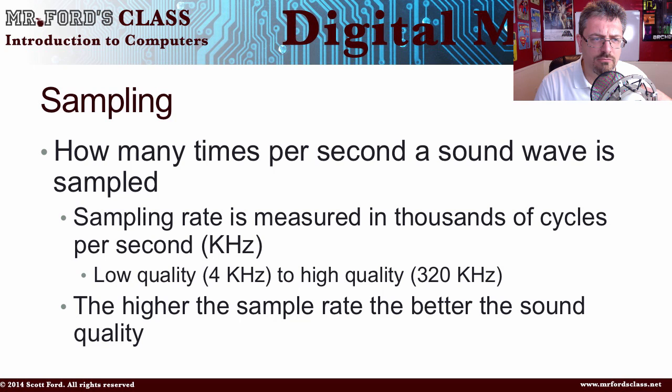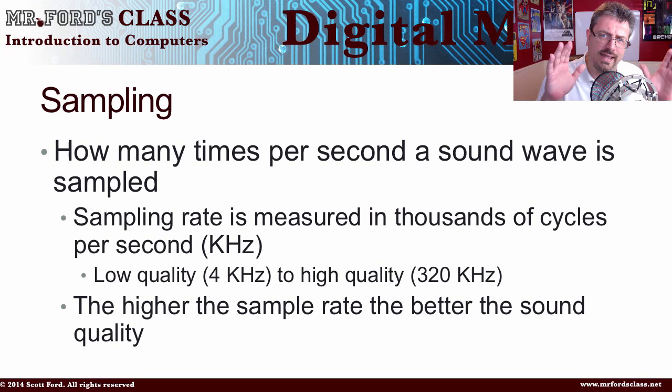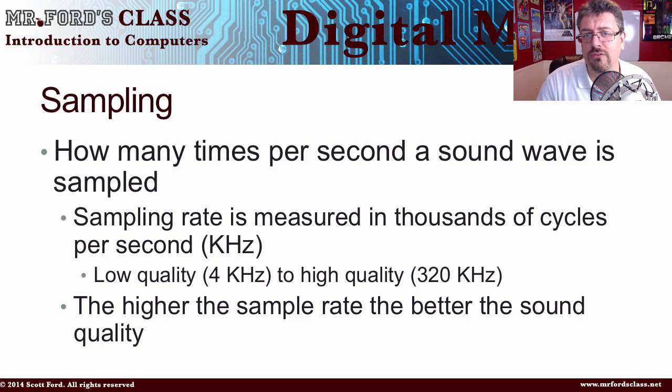Low quality — meaning really bad quality audio which isn't captured very well — is about 4 kilohertz, while high quality is around 320 kilohertz. So we have a range between really low and high. Obviously the higher the sample rate, the better the sound quality is going to be — the more of a representation of what it really sounds like.